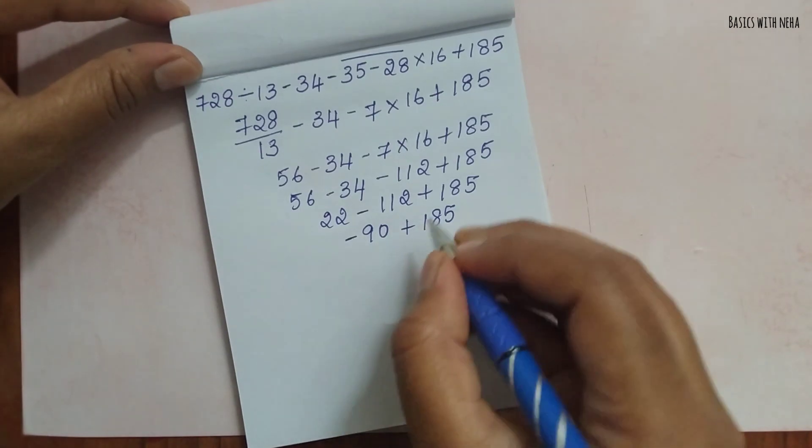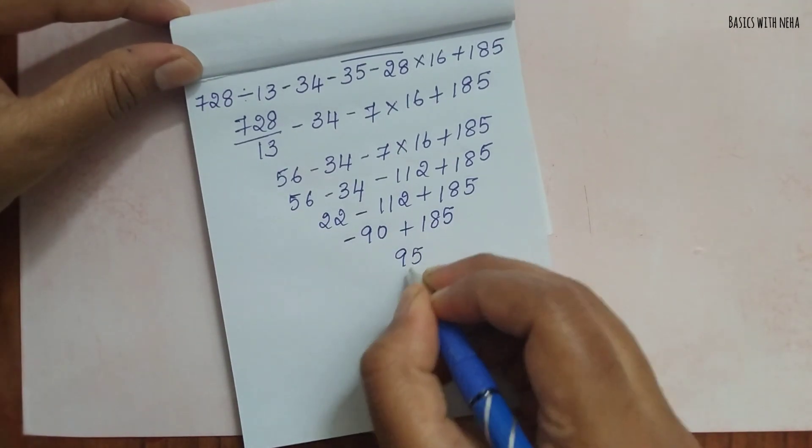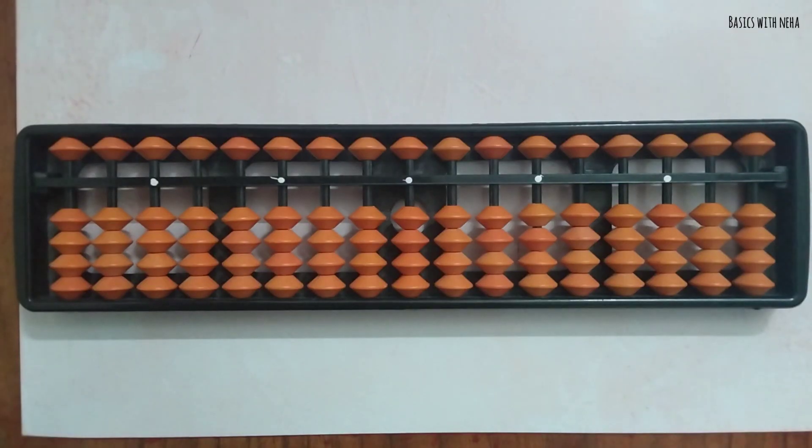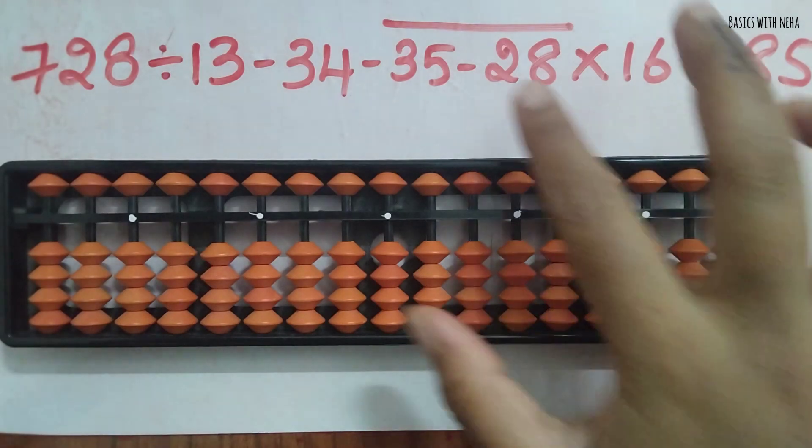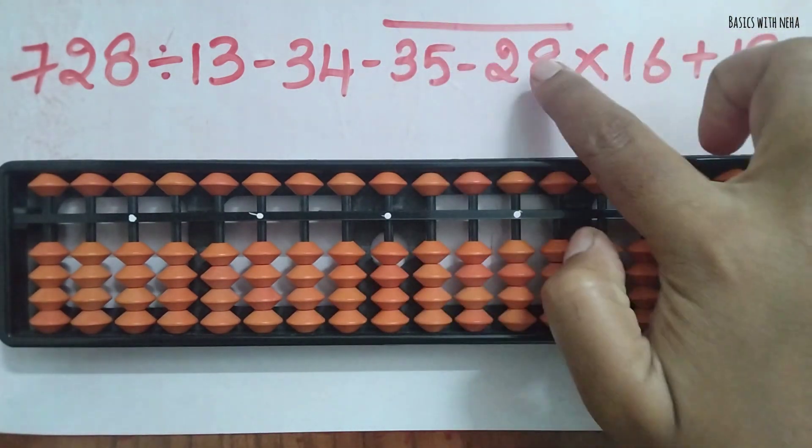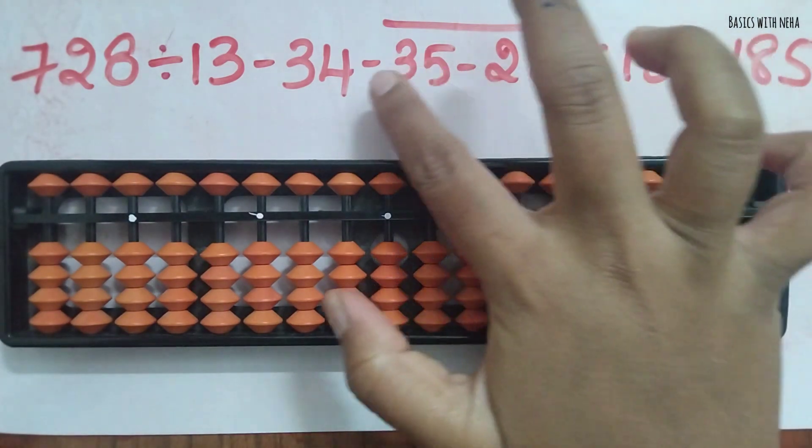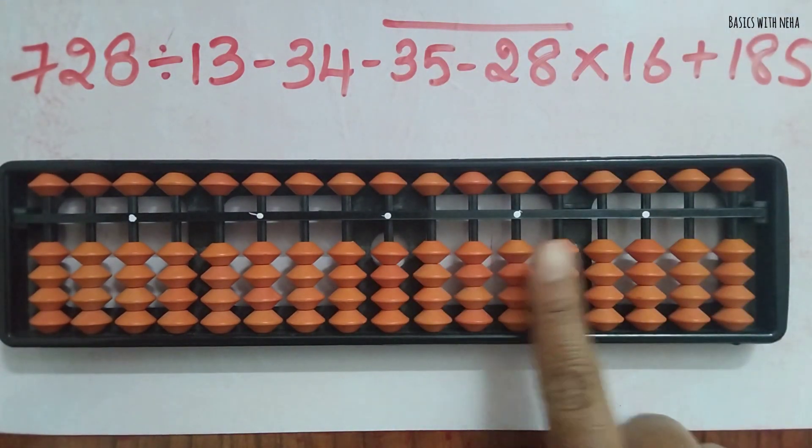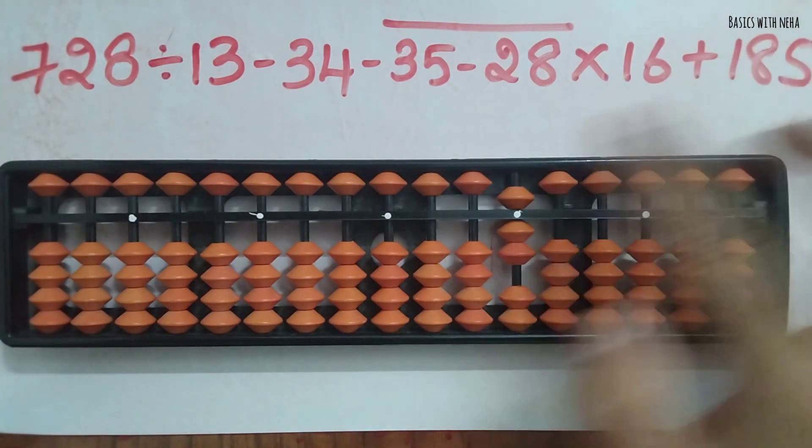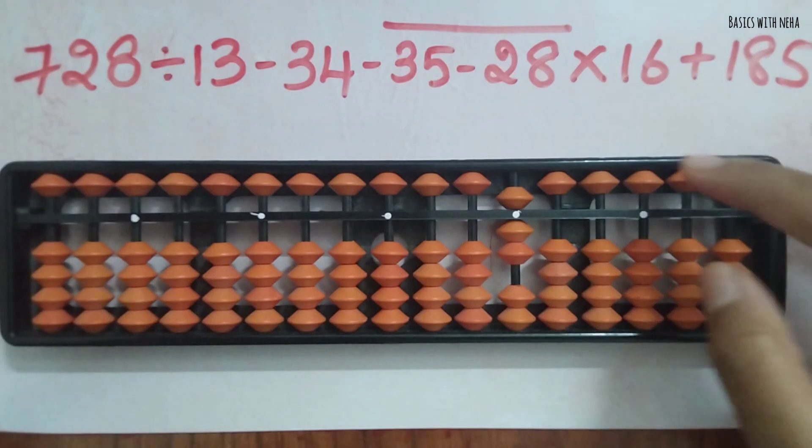The final answer - plus minus is minus, but we should put the greater number sign. The answer will be 95. Now we'll do the same thing using the abacus. First we have to do this bracket - that is bar bracket 35 minus 28. Since 35 is also having a minus sign, we'll do it this side: 35 minus 28 is 7.